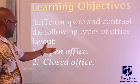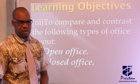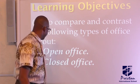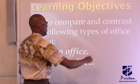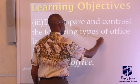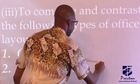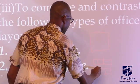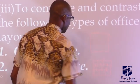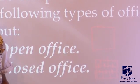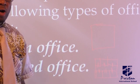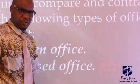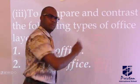Next, compare and contrast the following types of office layout. We have two types of office layout: we have an open office and a closed office. Let's look at the differences between both. An open office accommodates a large number of people and is not partitioned. Just like the senior staff room and the junior staff room, it is an open office.